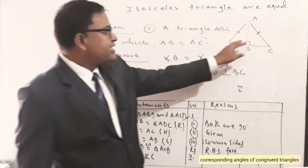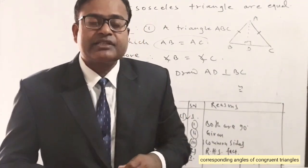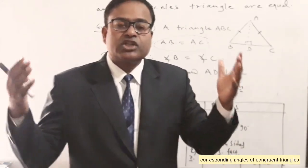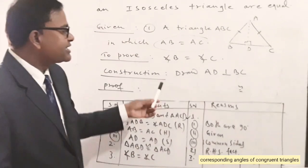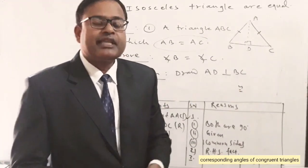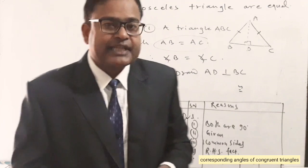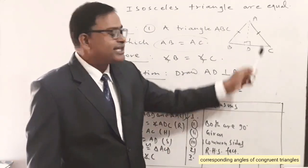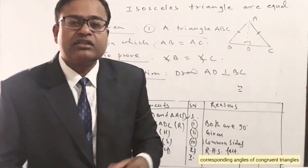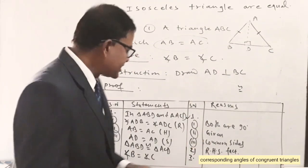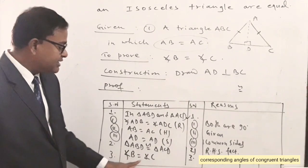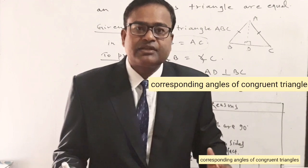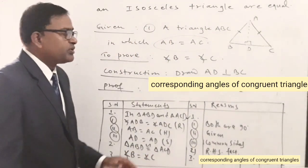When two triangles are congruent, their corresponding angles and sides are equal. Therefore, angle B equals angle C, because they are corresponding angles of the congruent triangles ABD and ACD. The reason given is: corresponding angles of congruent triangles are equal.